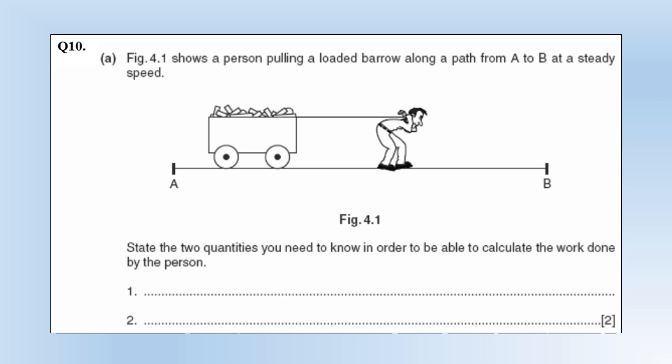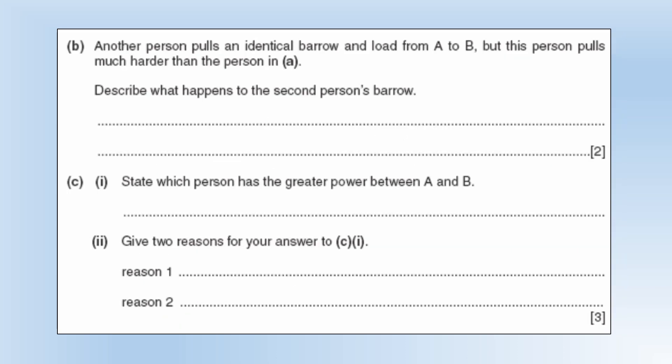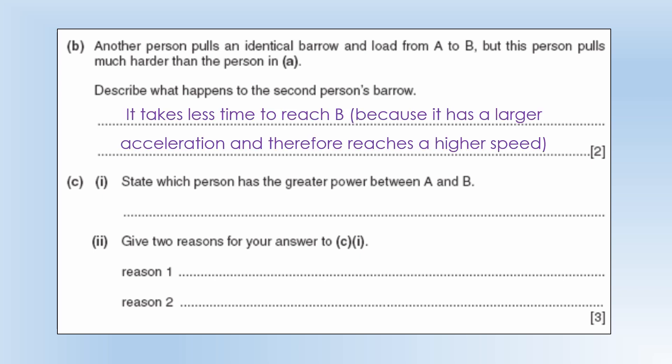A diagram shows a person pulling a loaded barrow along a path from A to B at a steady speed. State the two quantities you need to know to calculate the work done. Work done is force times distance moved parallel to the force, so we need force and the distance moved in the direction of the force. Another person pulls an identical barrow and load from A to B but this person pulls much harder. Describe what happens to the second person's barrow. It takes less time to reach B because it has a larger acceleration and therefore reaches a higher speed.